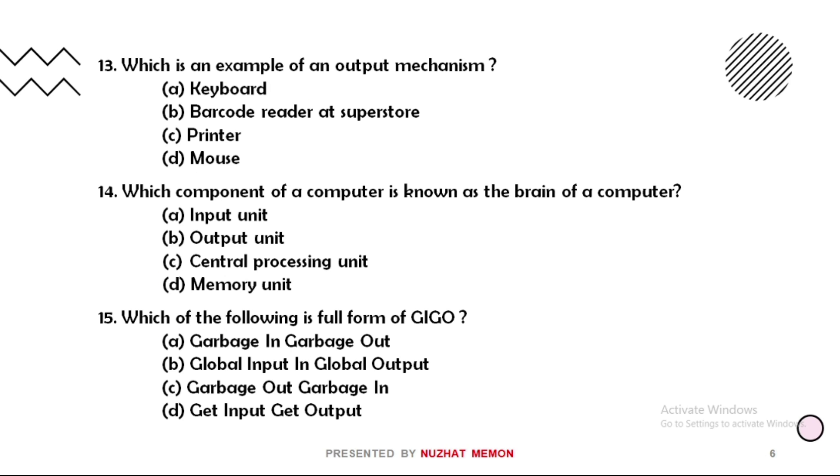Thirteen: which is an example of any output mechanism? The correct option is option C, that is printer. Fourteen: which component of a computer is known as the brain of a computer? The correct option is option C, that is central processing unit, CPU.